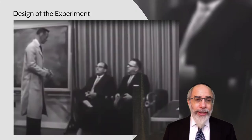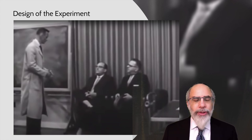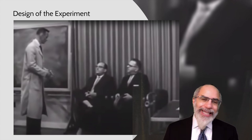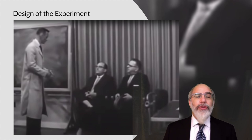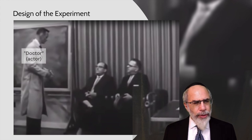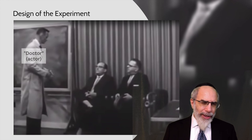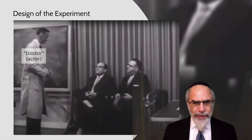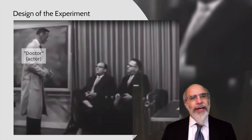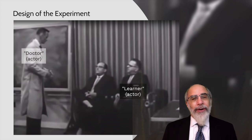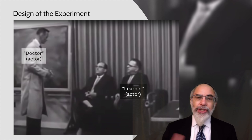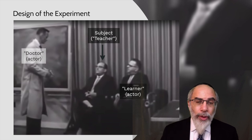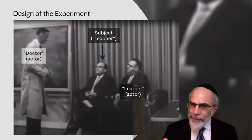He had two actors or accomplices play specific roles in the experiment, and the real subject was completely unaware that the other two people involved were actors. The first was a doctor — someone with the trappings of authority like a white coat, body posture, standing rather than sitting — external trappings of authority, not demonstrated with credentials, but conveying an aura of authority. Then he hired another person to play a learner, an actor who would pretend to be another subject off the street.